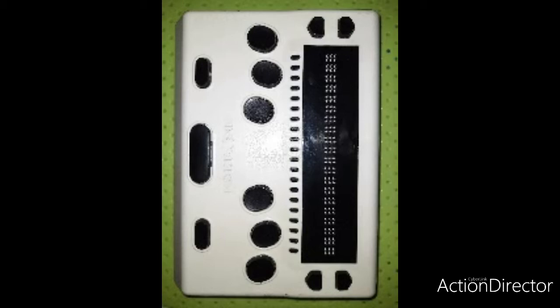We make use of BrailleBack to connect this device to our phones and VoiceOver with iPhones. There are four arrow keys on a Braille Me device which are used to navigate through the device.